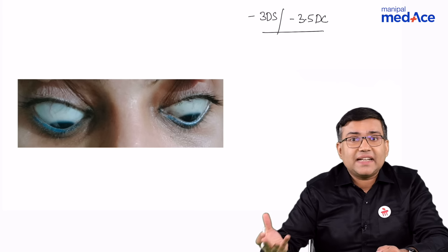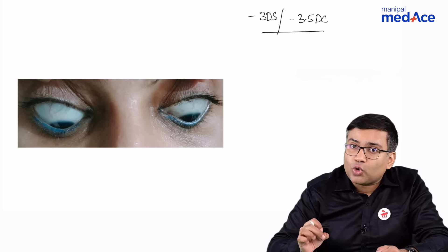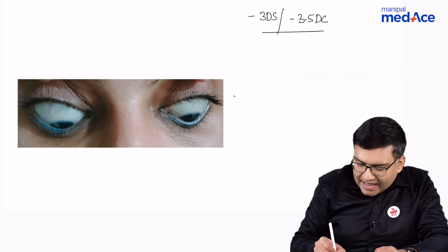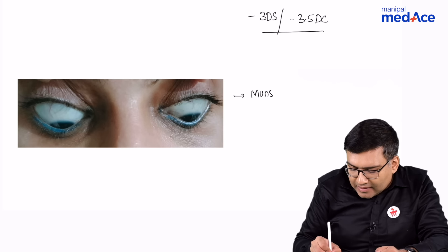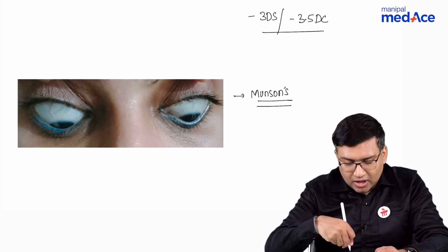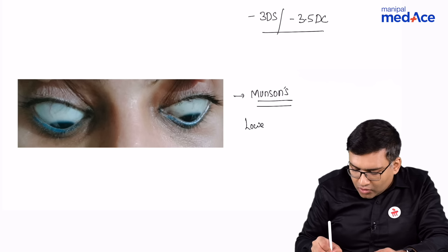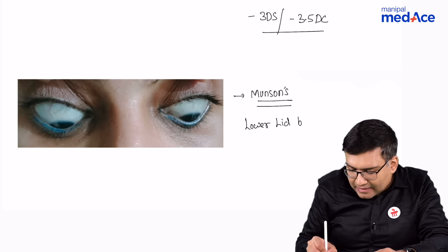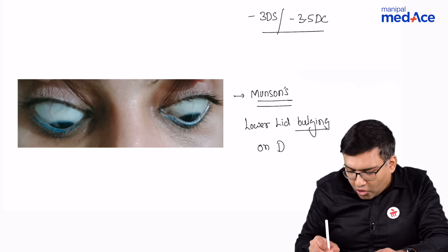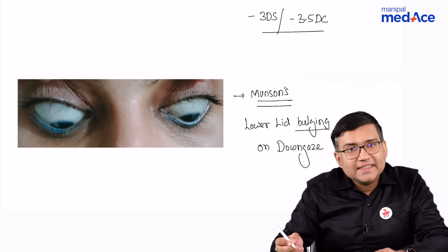Now the diagnosis here becomes keratoconus. And what you can see here is a sign which is called Munson sign. Whenever you talk about Munson sign, what is happening is there is a lower lid bulging on down gaze, and we get an irregular astigmatism in these patients. So this is what is called keratoconus.